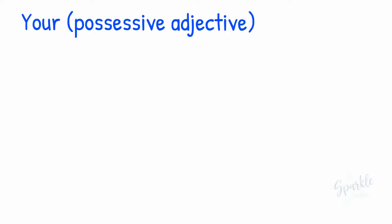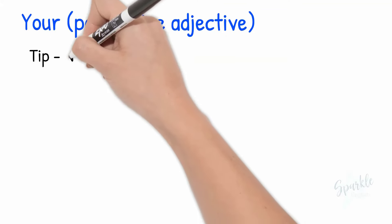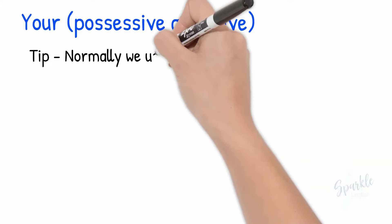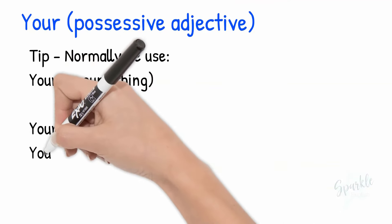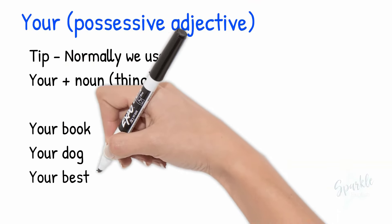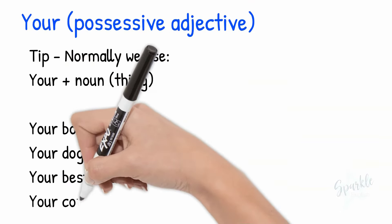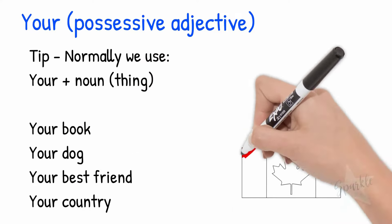Here is a little tip to tell you when we use your Y-O-U-R. We normally use your plus a noun. For example, your book, your dog, your best friend, your country.